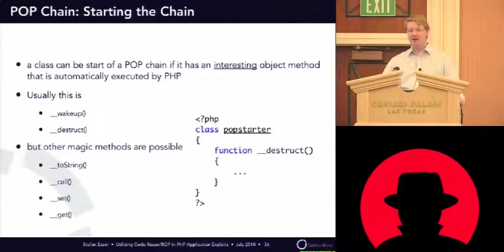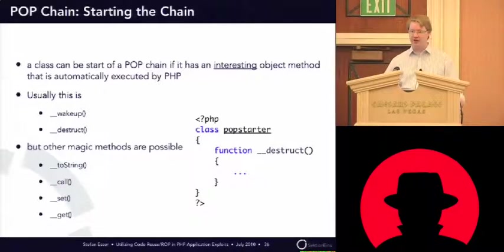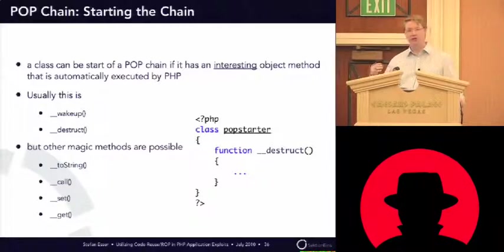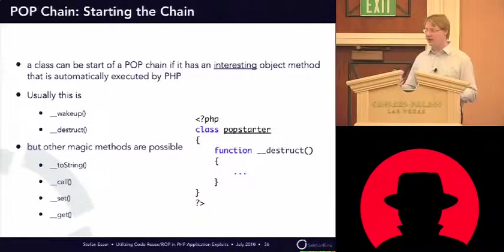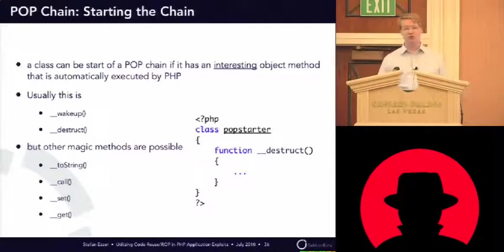You are really limited in how your POP chain will look and what methods you can use. The problem in PHP is you have to find a way to start the chain at all. This means the unserialize, or the code afterwards, must somehow trigger execution of the objects you just created. I already mentioned there's wakeup and there's destruct — these are the most obvious ways to start a POP chain.